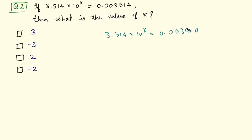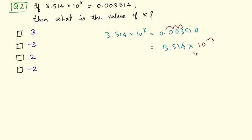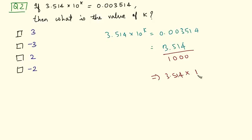We have to convert the right hand side into an equivalent left hand side. We can write 0.003514 as 3.514 into — we have shifted the decimal point to the right and the number of places shifted is 1, 2, and 3. So we have shifted the decimal point 3 places to the right, and because of that we divide by 10 raised to 3, giving us 3.514 divided by 1000, which equals 0.003514. This can be written as 3.514 times 10 raised to power minus 3.